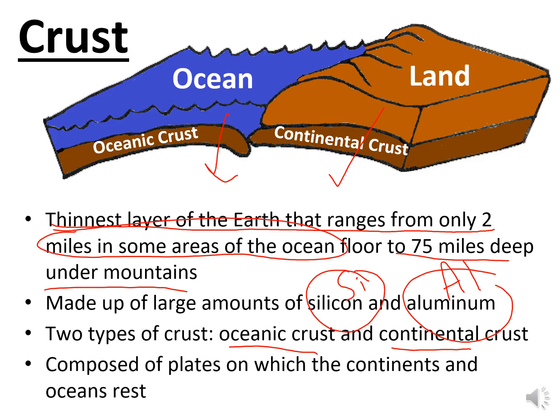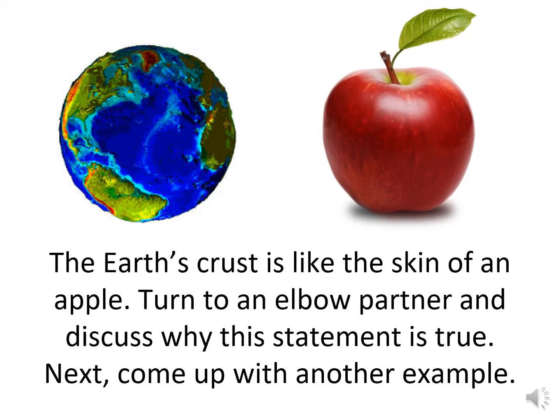The crust is composed of plates — the place where continents and oceans rest. Remember Pangea? This is how oceanic and continental crust began to spread apart and form different continents. Think of how thin the skin is on an apple — that's about how thin the crust is on the earth.